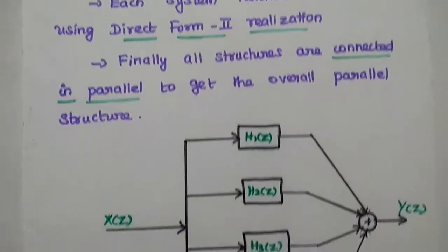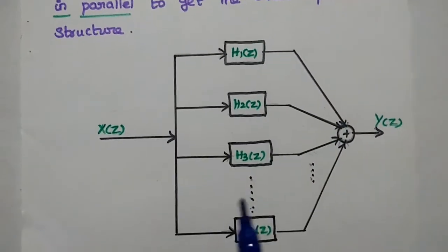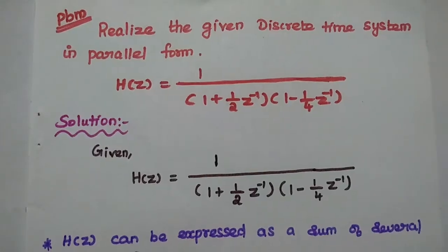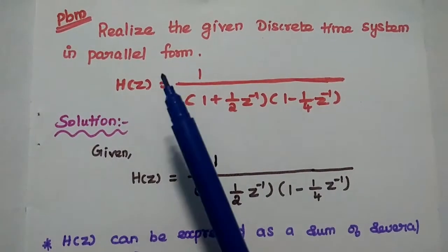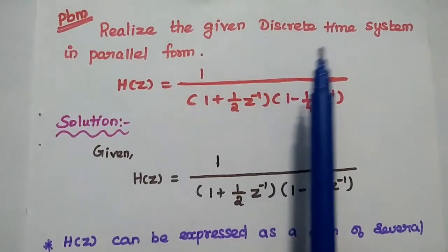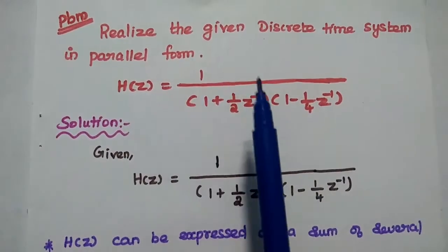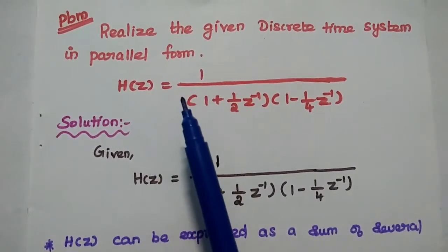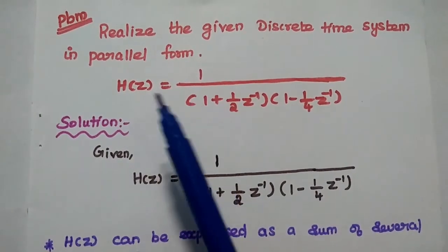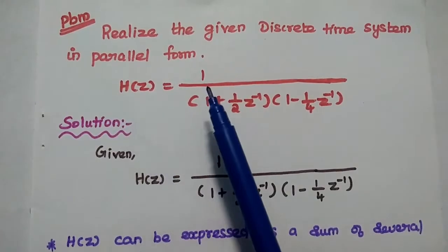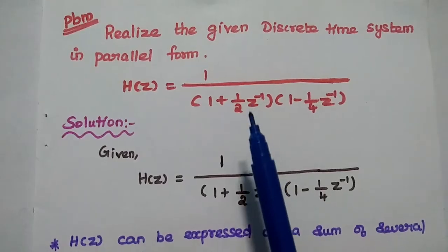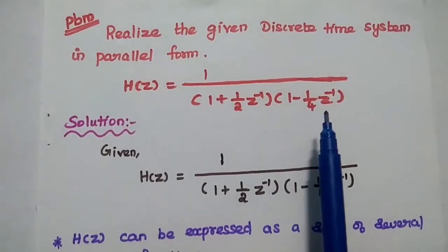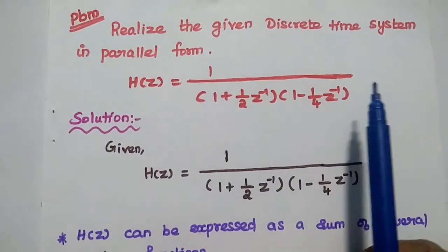This is the diagrammatic representation for parallel form realization. Let's solve one problem: to realize the given discrete time system in parallel form. The system function is given as H of Z equal to 1 divided by (1 plus 1/2 Z power minus 1) multiplied with (1 minus 1/4 Z power minus 1).